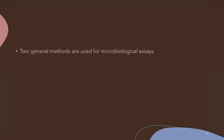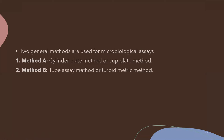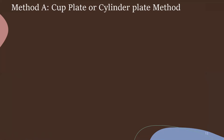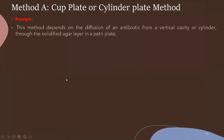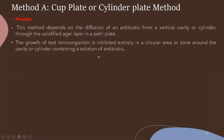Two methods are used for microbiological assay: the first is the cylinder plate or cup plate method, and the second is the tube assay or turbidimetric method. We are going to perform the practical by the cup plate or cylinder plate method. The principle of this method is diffusion of an antibiotic from a vertical cavity or cylinder through the solidified agar layer in a Petri plate. This method is also known as the agar diffusion method.